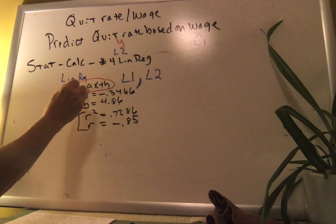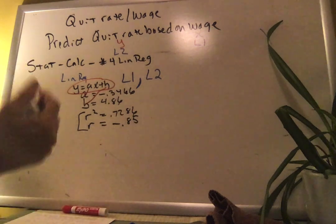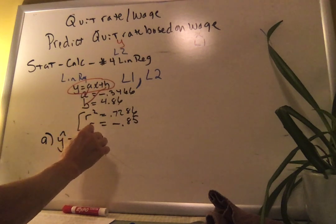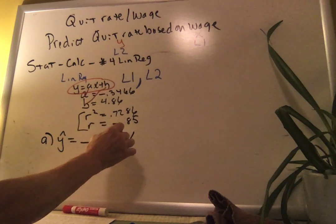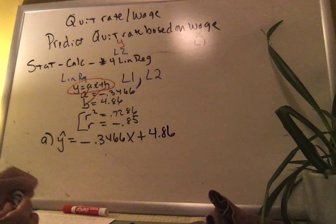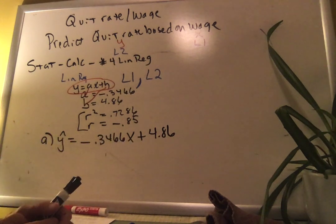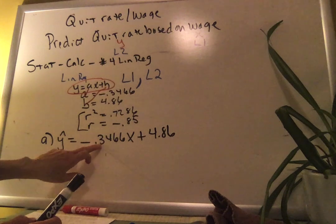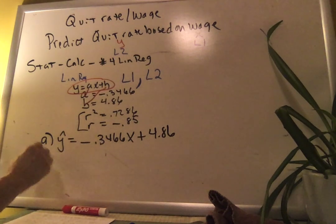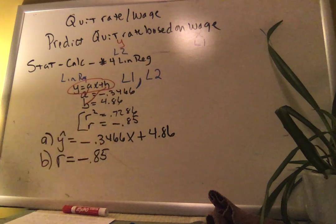Your calculator tells you what it means by a and b, so stick those in. For Part A on the handout, you should write: ŷ = −0.3466x + 4.86. If your answer is a little off, you probably mistyped your data — go back and fix your numbers.